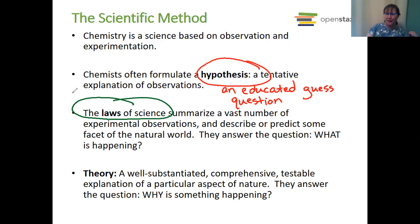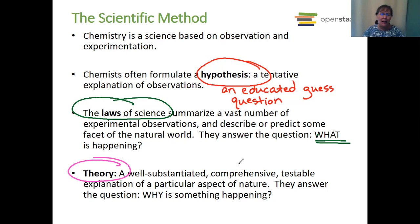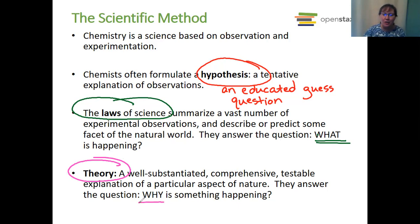A lot of people think first we have a hypothesis, then a theory, then a law — it doesn't quite work like that. A law isn't more important than a theory; it answers something very different. A law describes what is happening. On the other side, we have a theory. A theory is a well-substantiated, comprehensive, testable explanation of a particular aspect of nature. We do lots and lots of experiments before coming up with our theory, and theories answer the question: why is something happening? So it's why versus what — and that's a really important distinction.